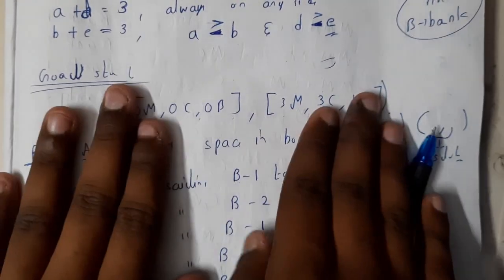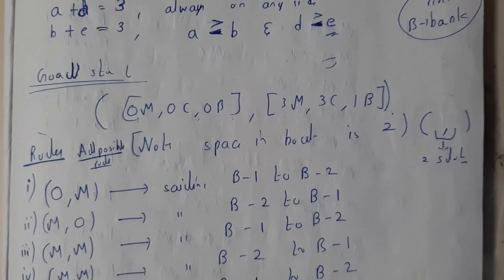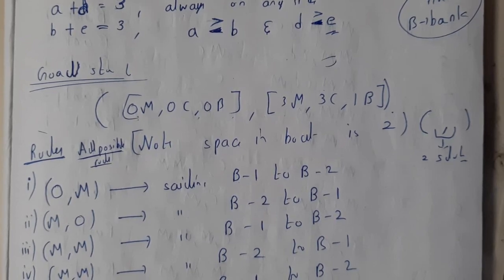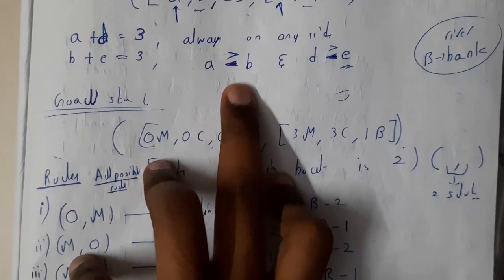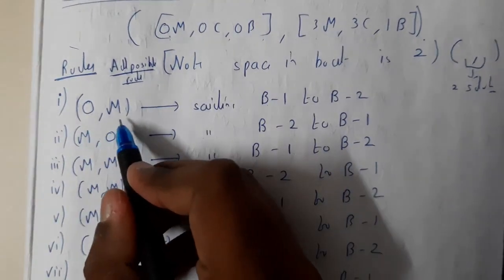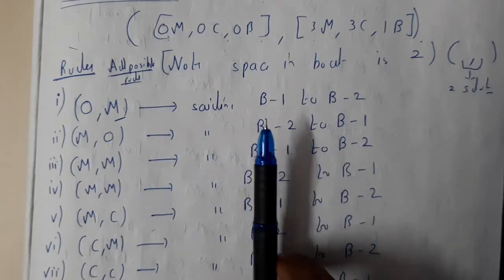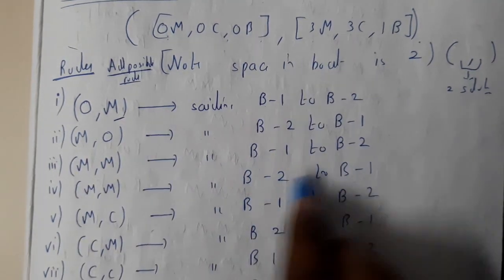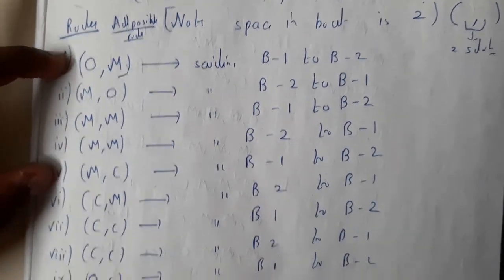Our goal state will be (0, 0, 0) on bank one and (3, 3, 1) on bank two — we need to shuffle everything to the other side. In this problem there are totally 10 different possible combinations in which they can travel from one side to the other. One missionary can travel from bank one to bank two, one missionary from bank two to bank one, two missionaries from bank one to bank two, and two missionaries from bank two to bank one.